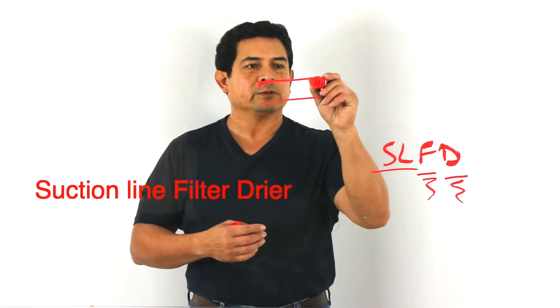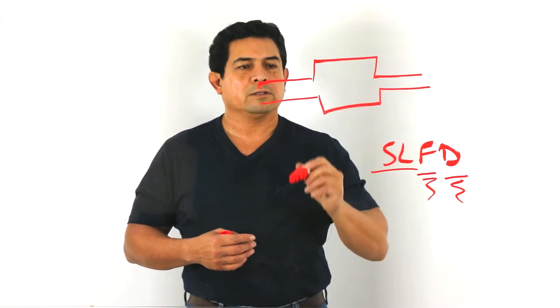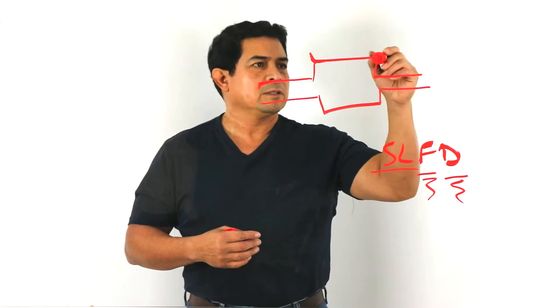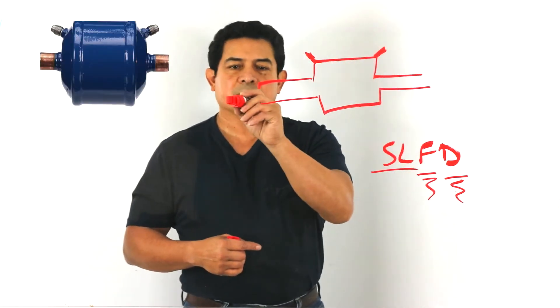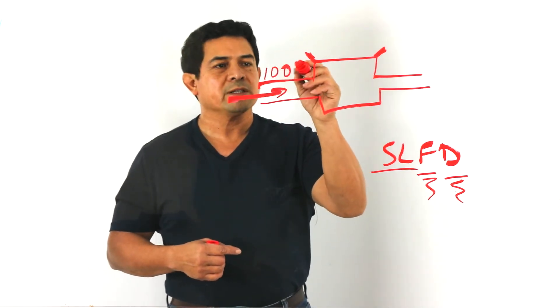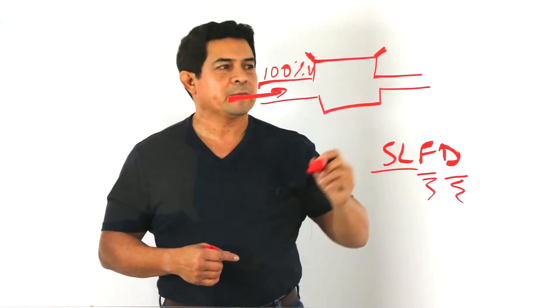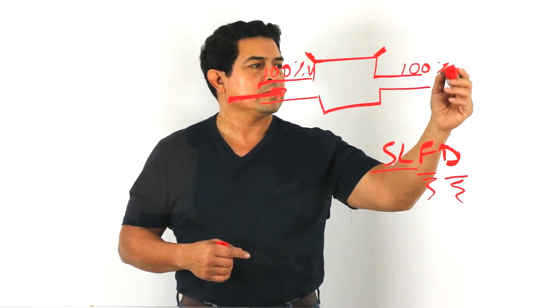So on a suction line filter dryer, basically you're going to have something that looks like this. Refrigerant is going to be going in here and it's going to be 100% vapor. The vapor coming out is also going to be 100% vapor.